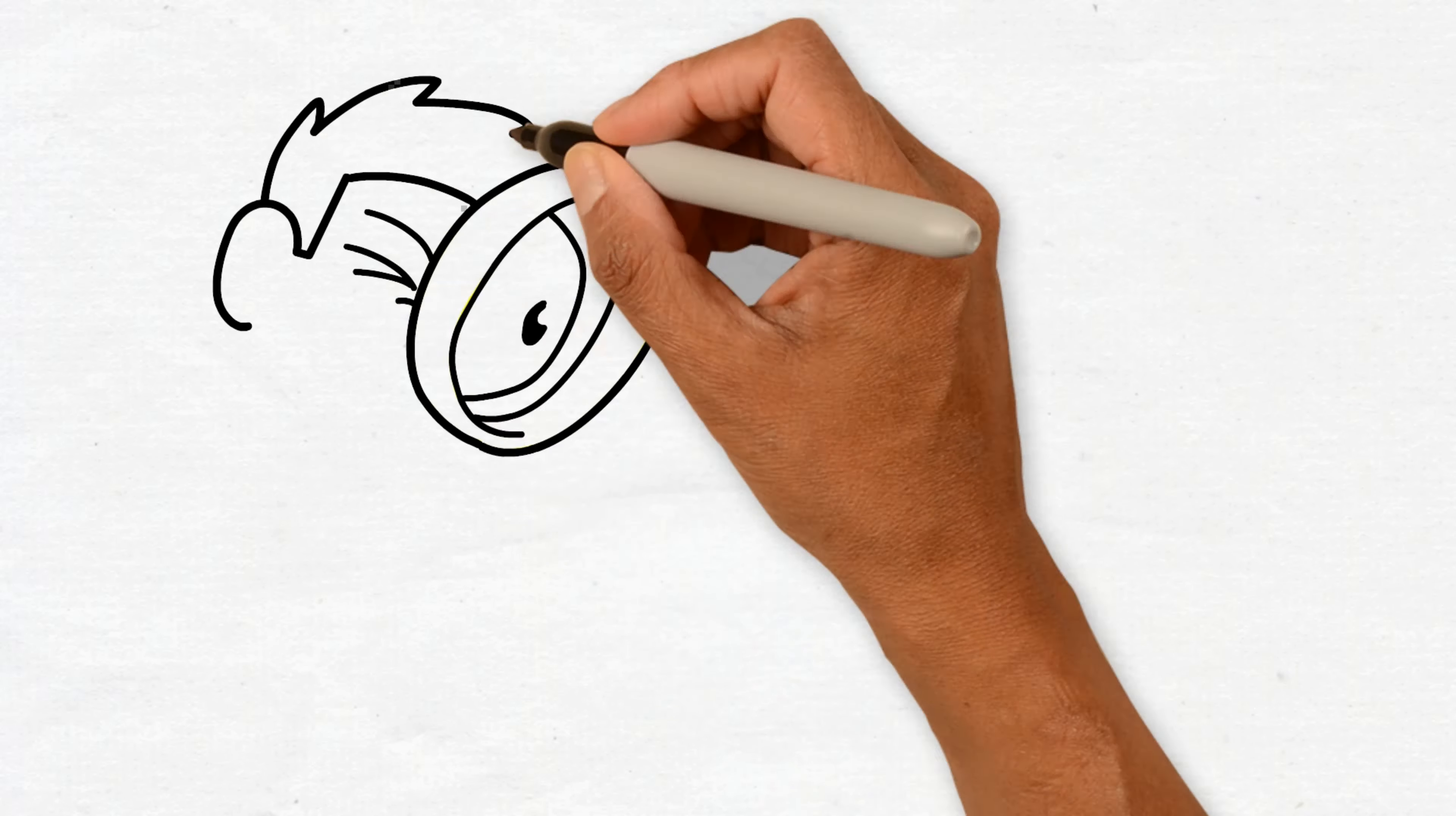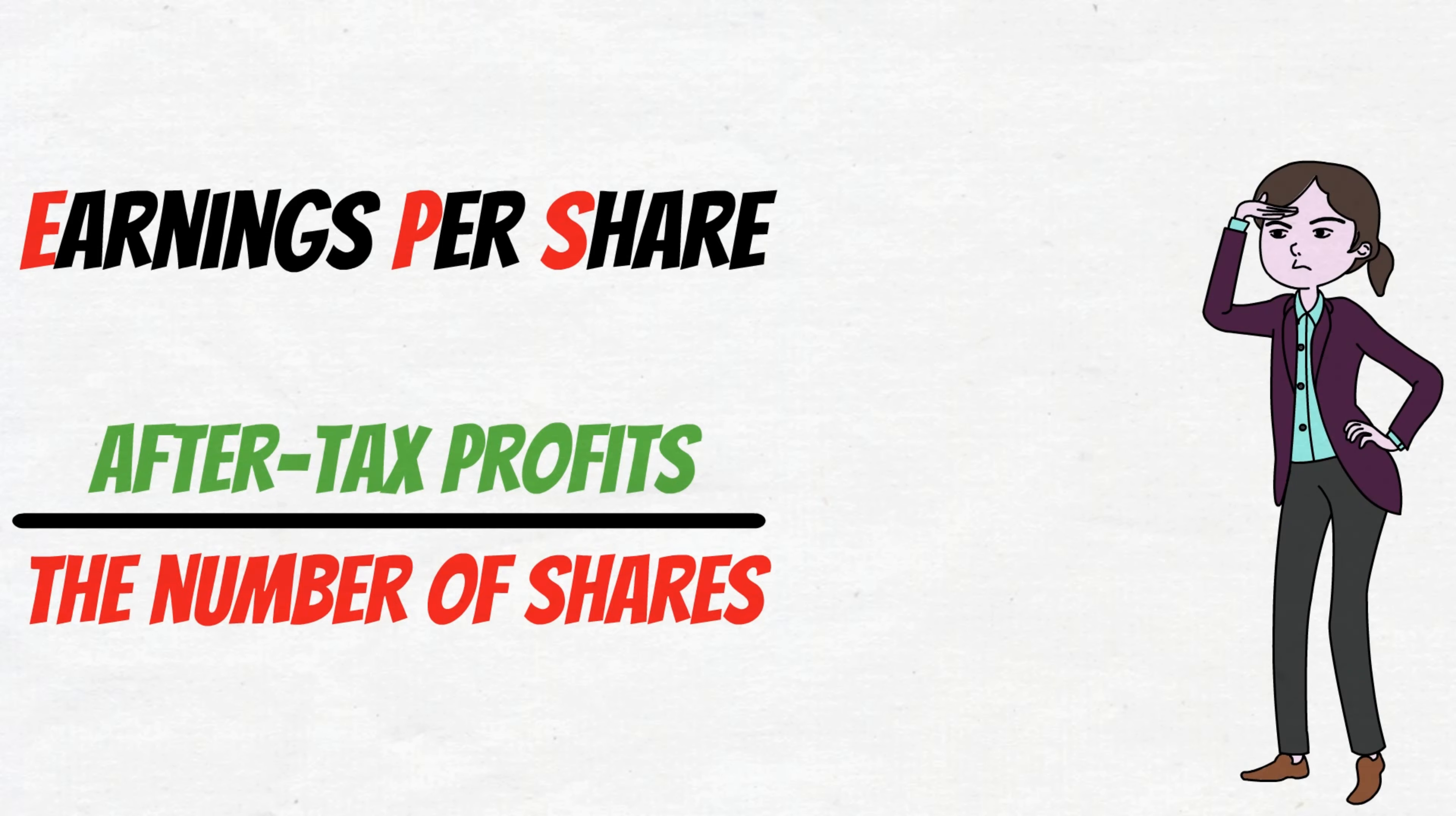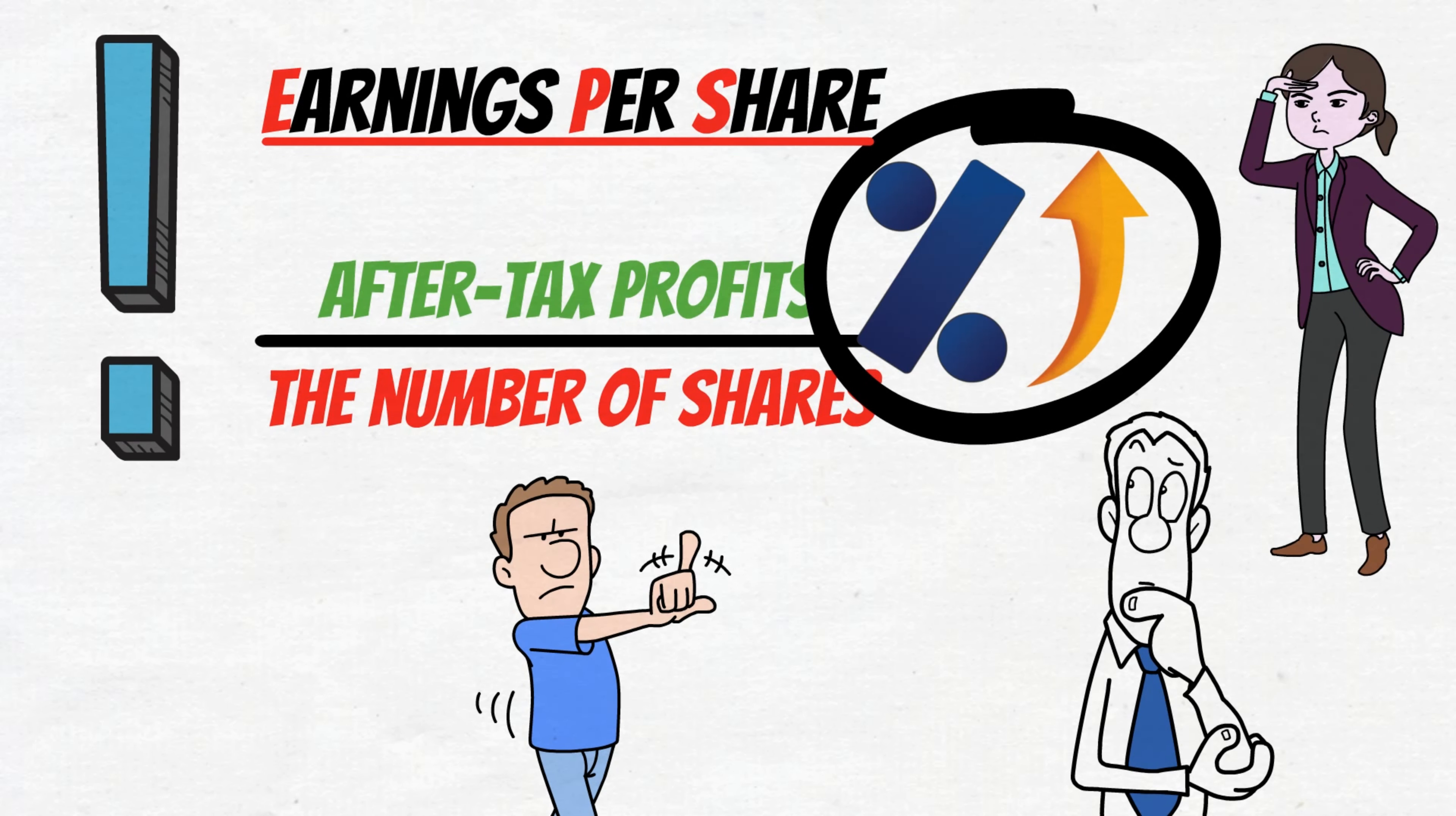When searching for these profitable companies, you should focus on the earnings per share or EPS number. This number is calculated by dividing a company's total after-tax profits by the number of shares issued. You should search for companies with big consistent percentage increases in their EPS number. Of course, you shouldn't buy a stock on earnings growth alone. There are other important factors to consider, but the percentage increase in EPS is the most important factor to look at when making a decision to buy.